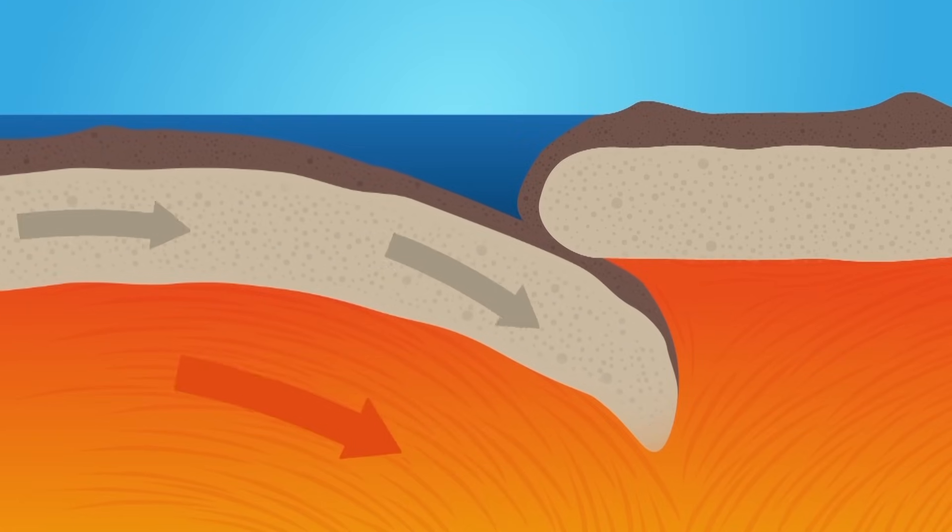An oceanic plate pushes itself under a continental one. It disappears into the Earth's hot mantle, creating an ocean trench up to eight kilometers deep.